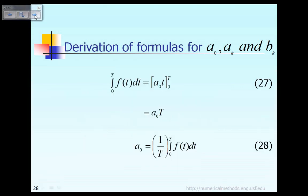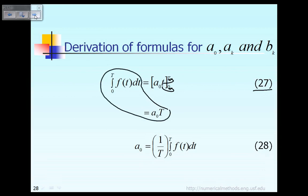As indicated in equation 27, if you evaluate small t with the upper limit capital T and then subtract small t with the lower limit 0, then the right-hand side becomes a0 times capital T. From this equation we can easily solve for the constant a0, as indicated in equation 28. So basically, I have proved to you the formula to obtain a0, which is 1 over T times the integral of f(t) dt.